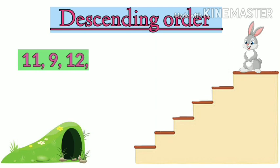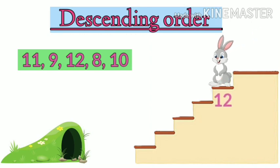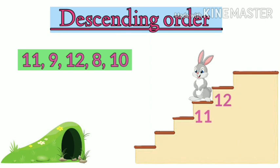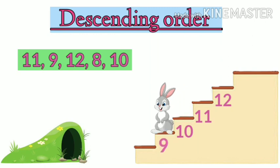11, 9, 12, 8 and 10. Now children, think, descending means bigger to smaller. So first number is, yes, 12. After 12, 11. Then 10. After 10, yes, 9. Then 8.